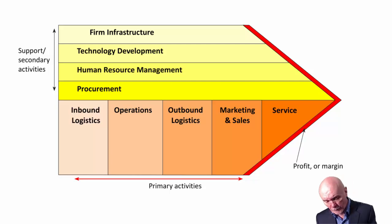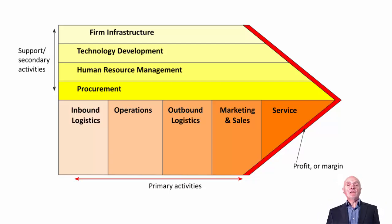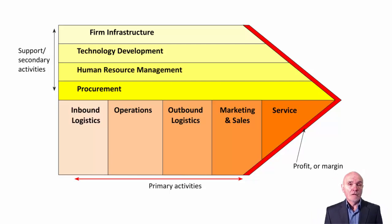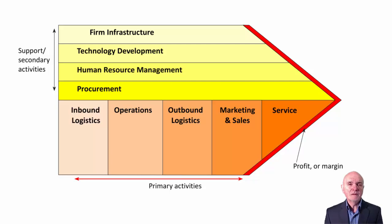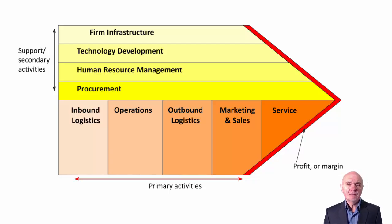Basically, what Michael Porter does is put onto this diagram his grouping of the various activities which can take place in every organisation. Along the bottom we have what are called the primary activities — closely associated with the actual manufacturing of an article. Inbound logistics is the receipt of raw material, not the ordering of it.